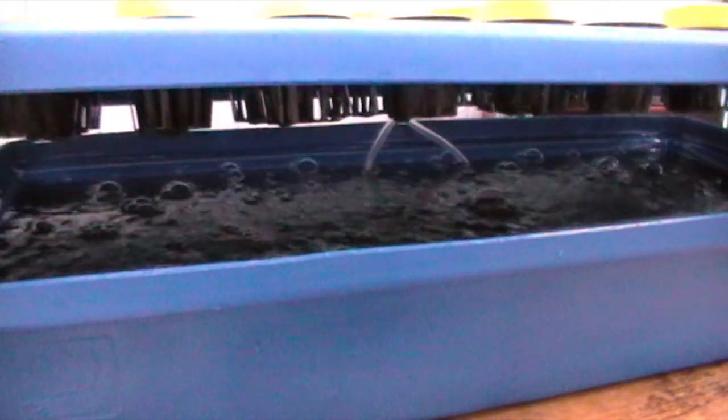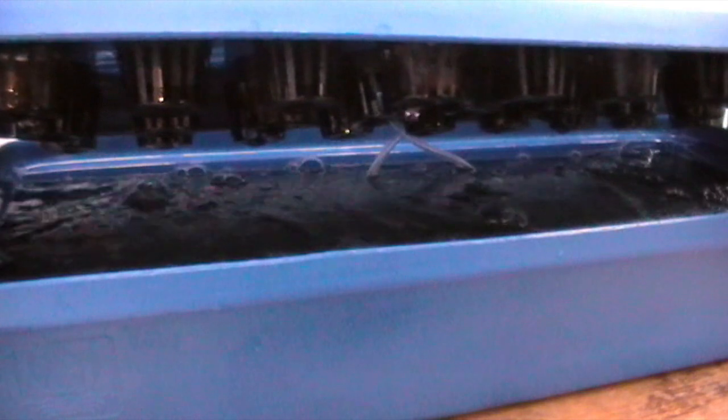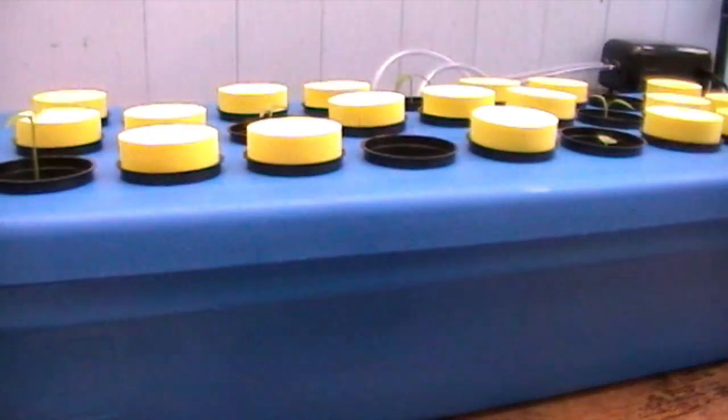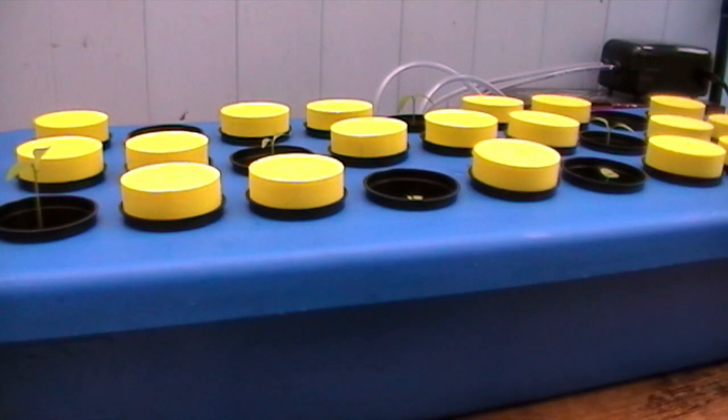I keep the water pH to 5.8 to 6.5. For seedlings I just use tap water as it has enough dissolved salts. For cuttings I add a weak hydroponic nutrient once roots emerge.